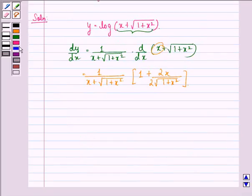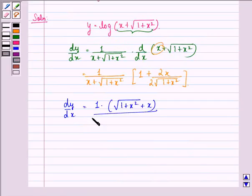Therefore, dy/dx = 1·(√(1+x²) + x)/[(x + √(1+x²))·√(1+x²)].